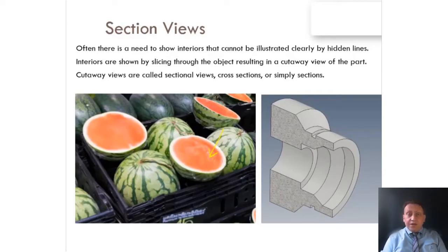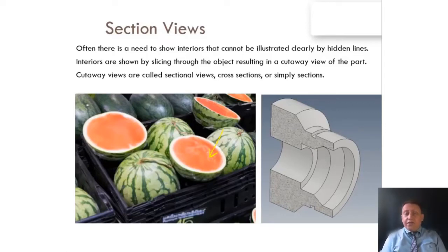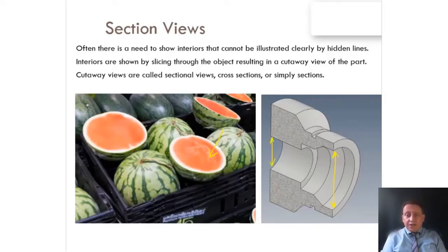Interiors are shown by slicing through an object. As an example, consider this watermelon — after you cut the watermelon, you can see it clearly from inside. For a cylindrical object, I have a 3D model showing several different diameters. Here in yellow, I have a big diameter and small diameter at the end. By adding a section view and cutting the part, you can easily see the part from inside.